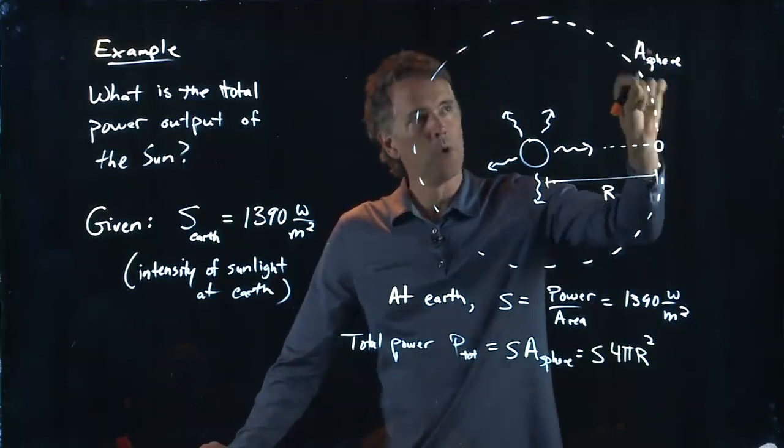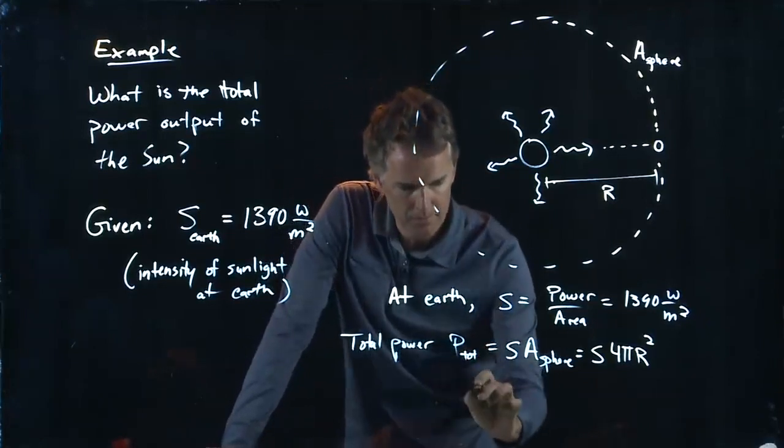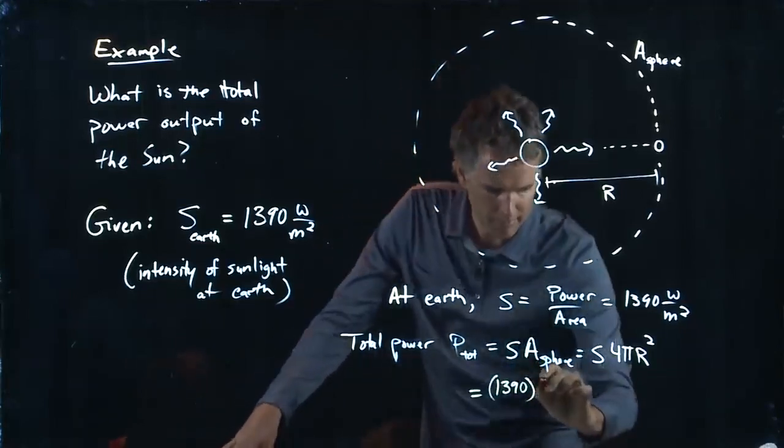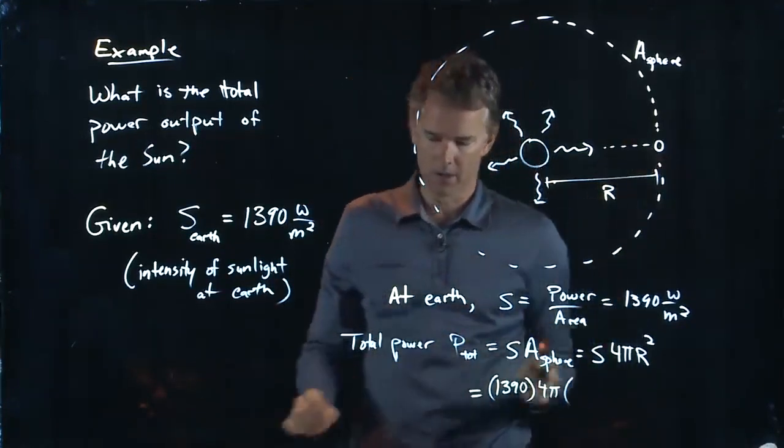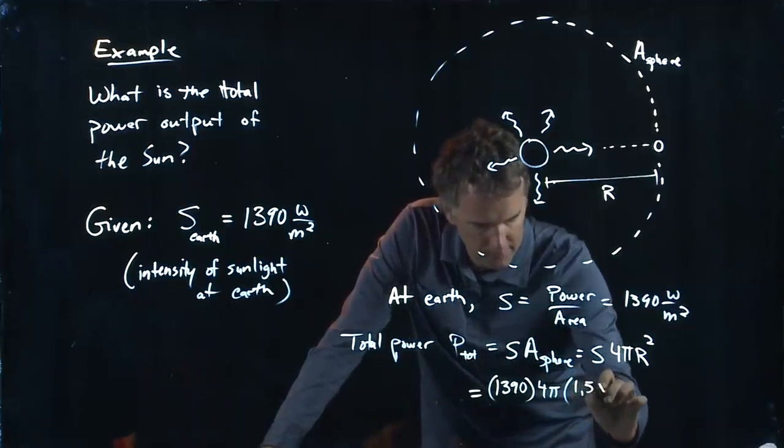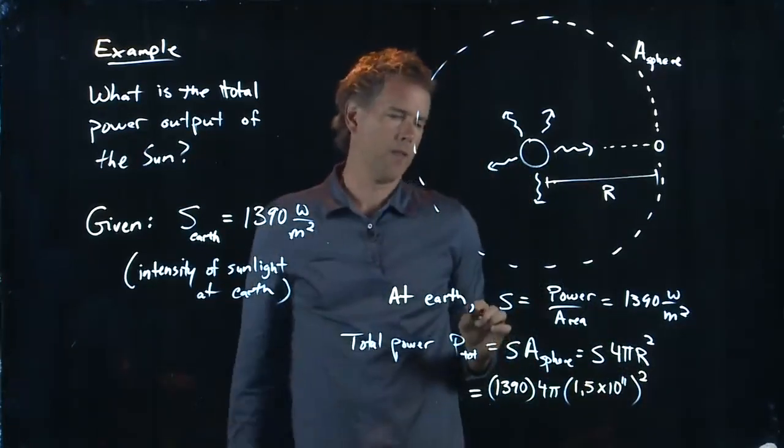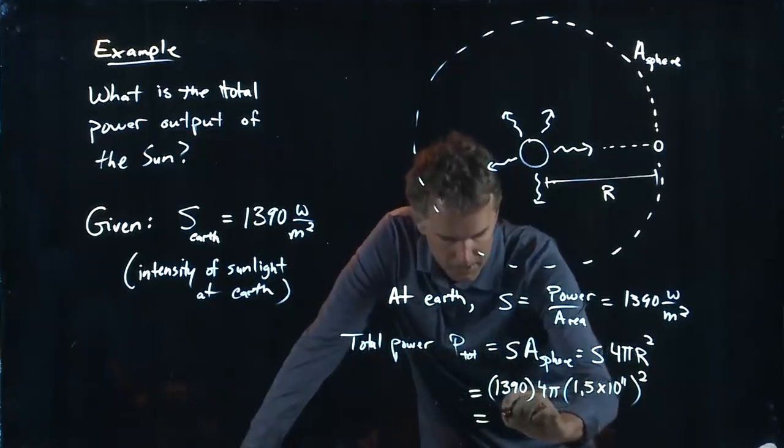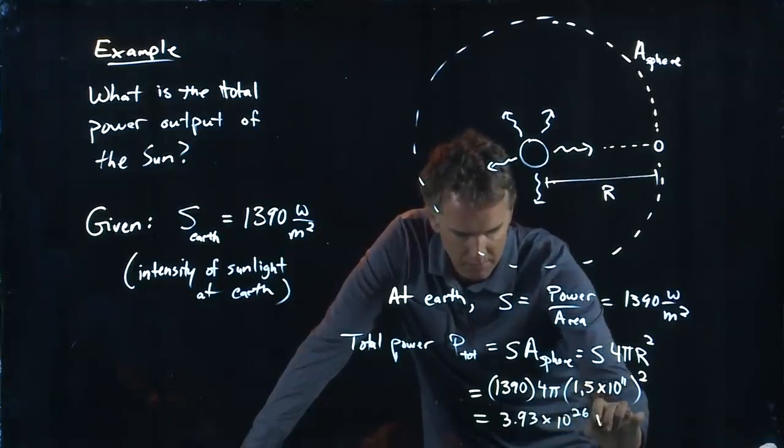Now take our little intensity and multiply it by the area of this sphere. And as you can imagine, that's going to be a pretty big number. So we have 1390 for S. We have a 4. We have a pi. And now we need this number R. How far is the Earth from the sun? It is 1.5 times 10 to the 11 meters. And so you're going to square that. I get 3.93 times 10 to the 26 watts.